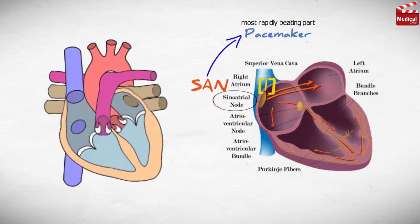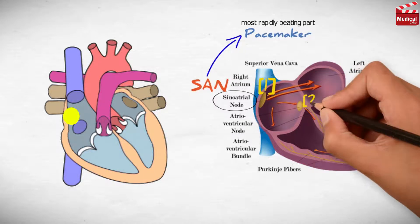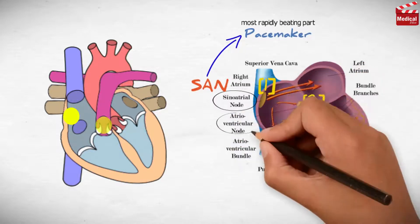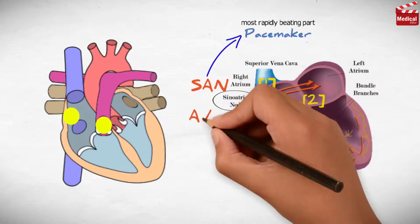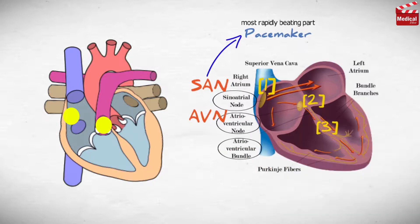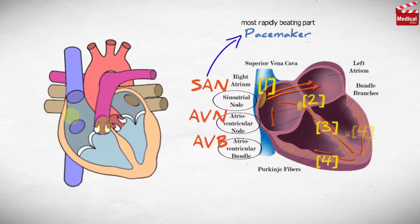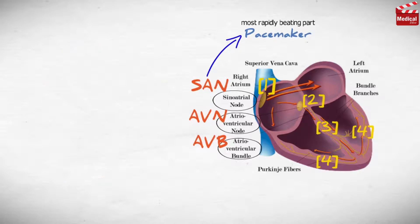The impulse starts from the sinoatrial node, then travels through the atria, producing contraction of the atria. Then it reaches the atrioventricular node, then to the atrioventricular bundle, then travels through Purkinje fibers in the ventricles, producing contraction of the ventricles.